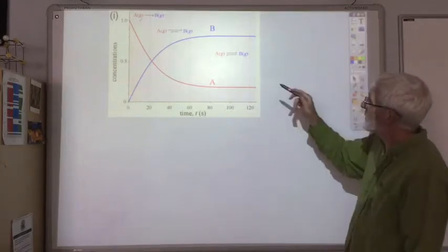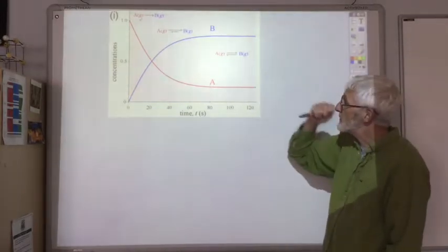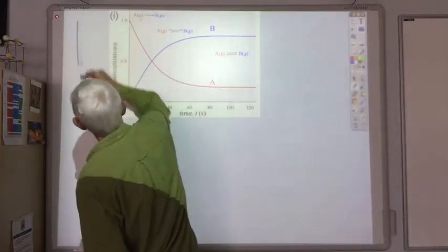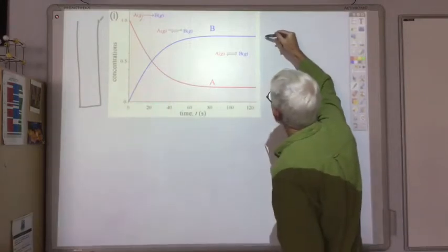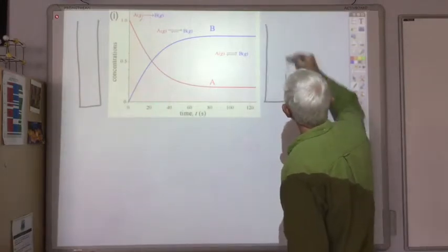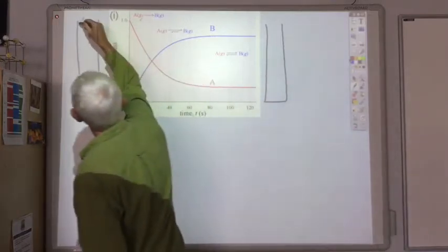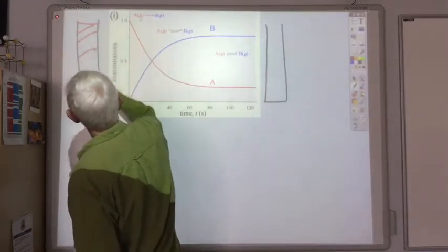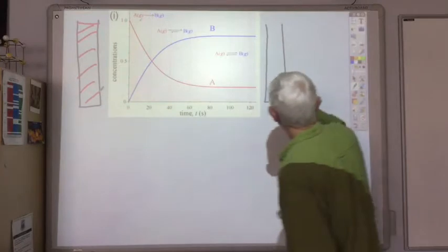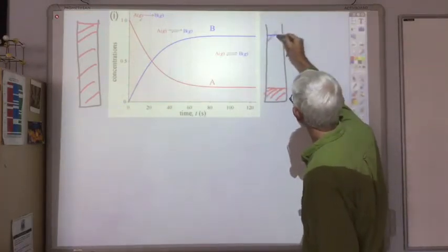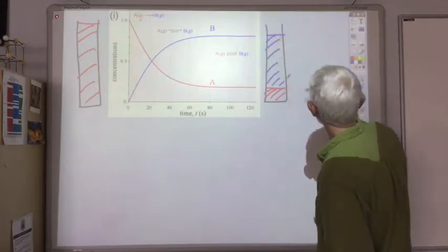So this is the same graph shown again. And I'm going to add in these little diagrams. What it looked like when we started and what it looked like when we finished. So we started off with lots of A in our beaker. And finished off with just a little bit of A. And lots of B.